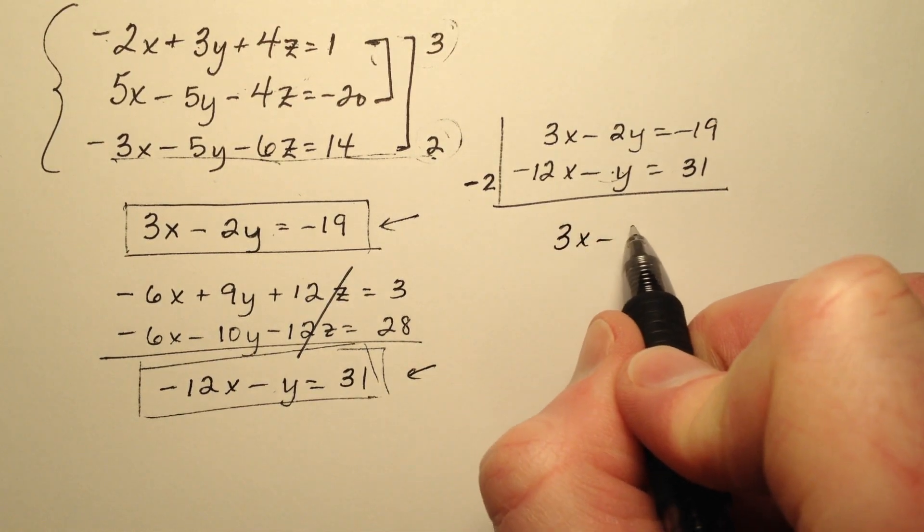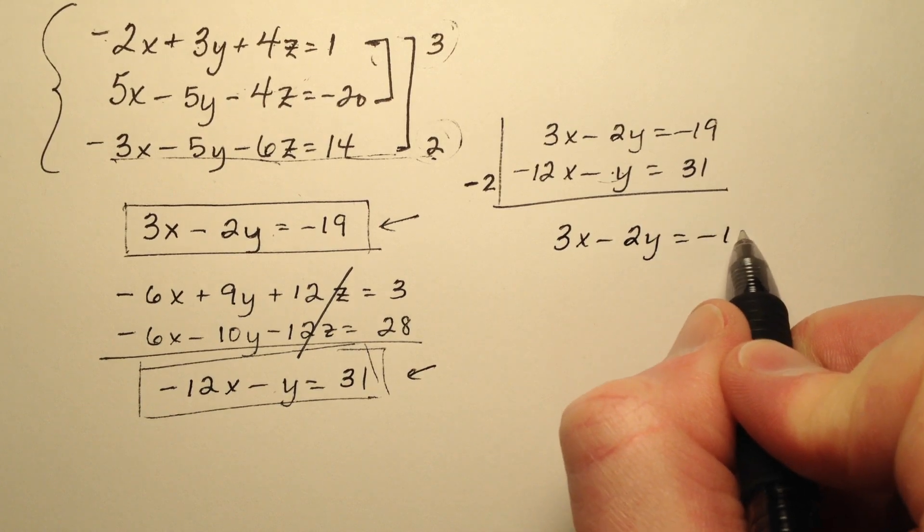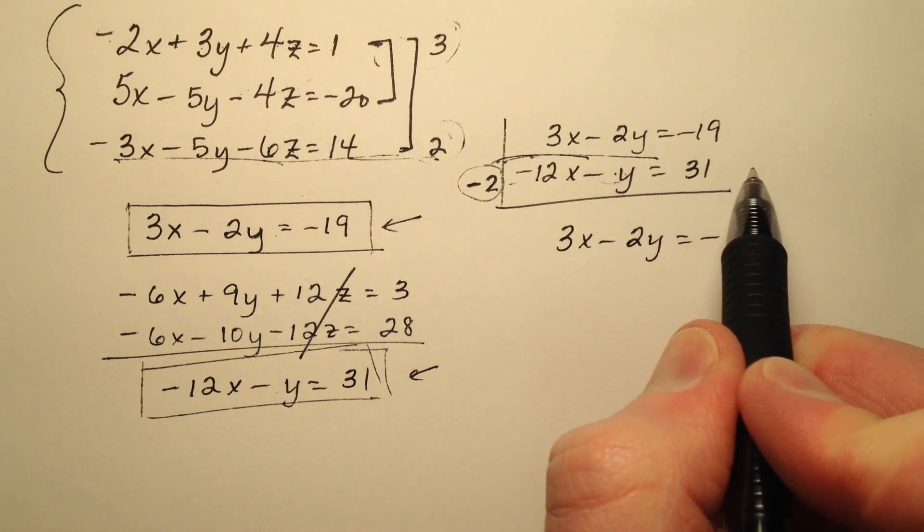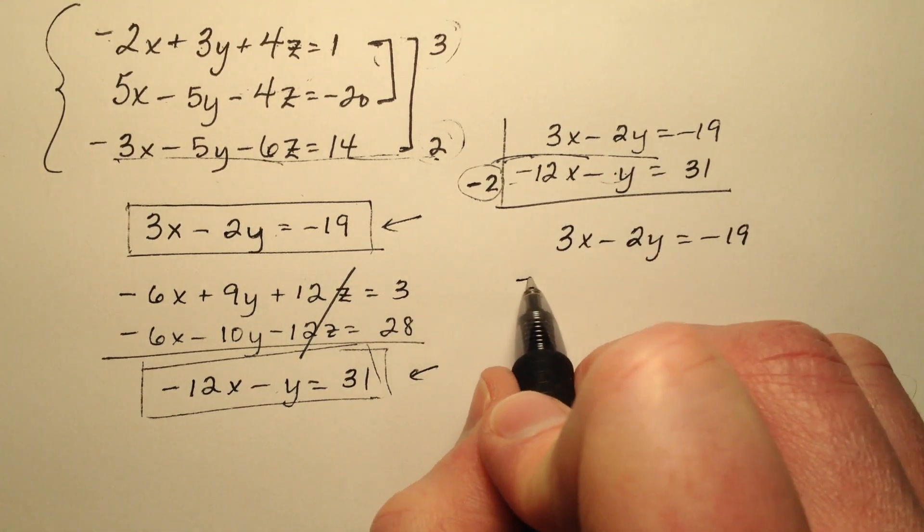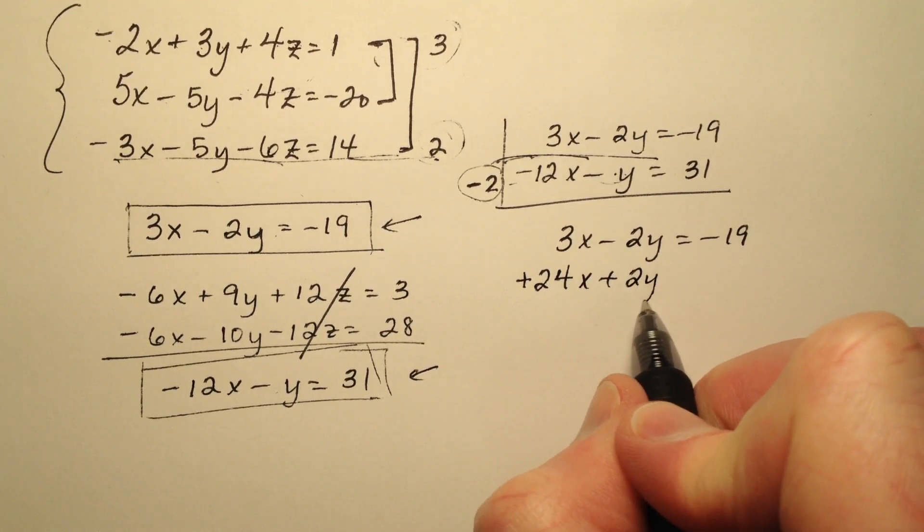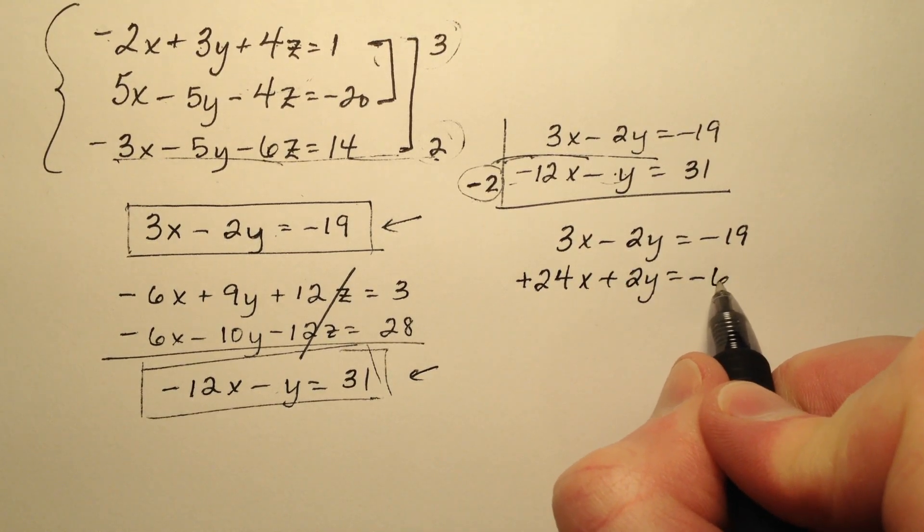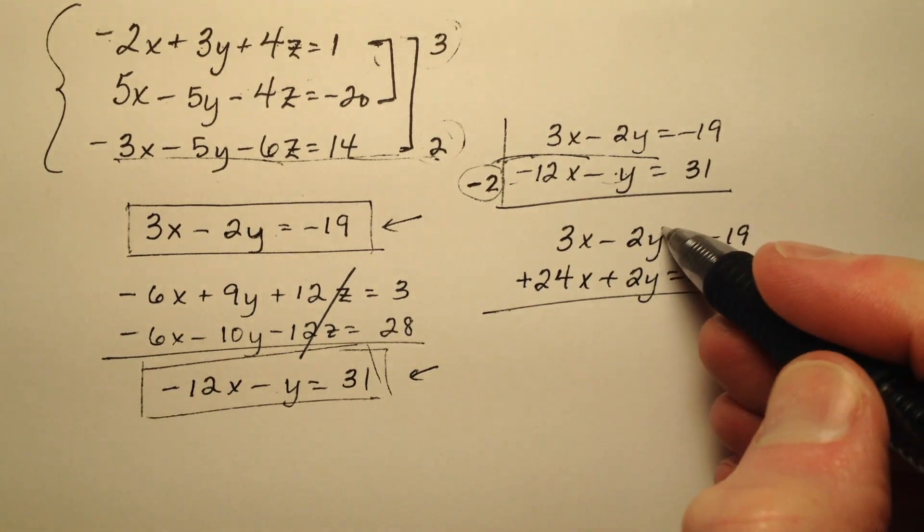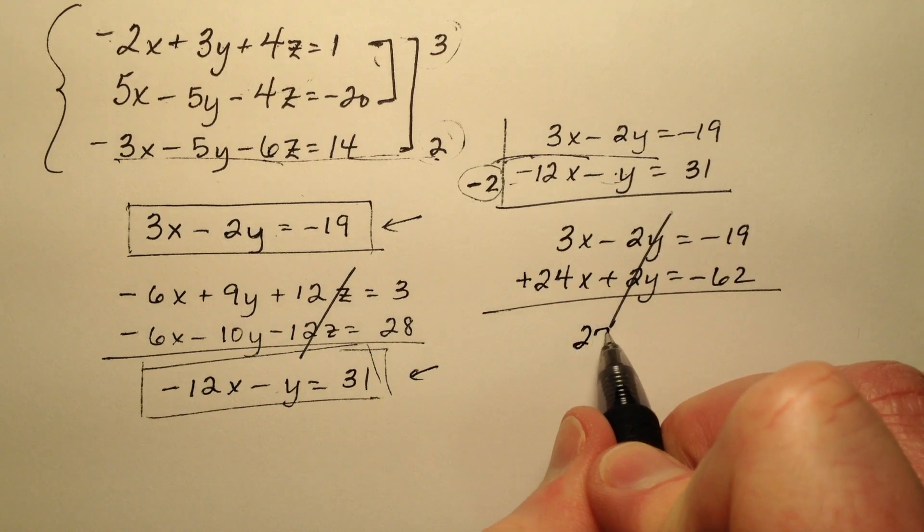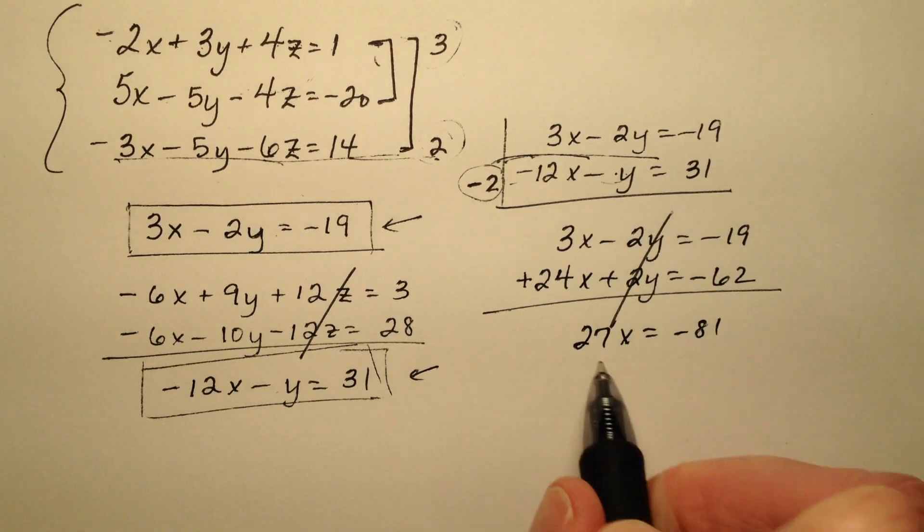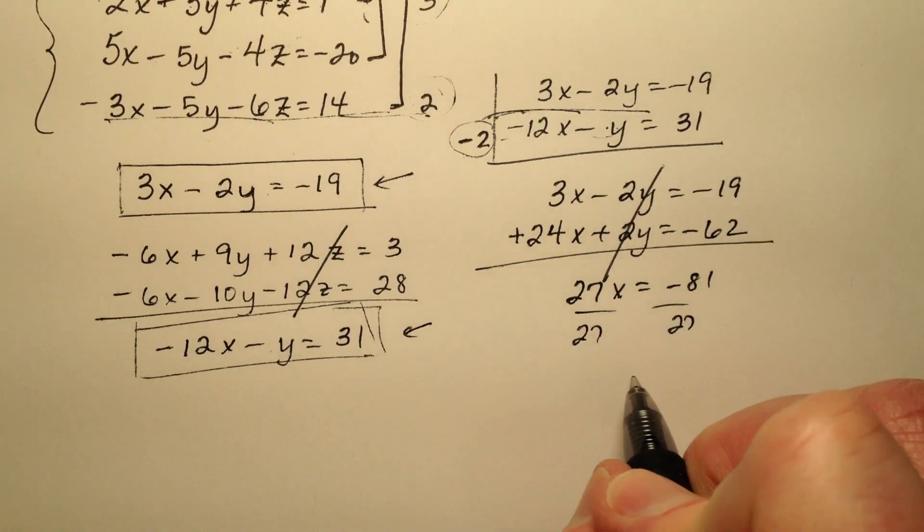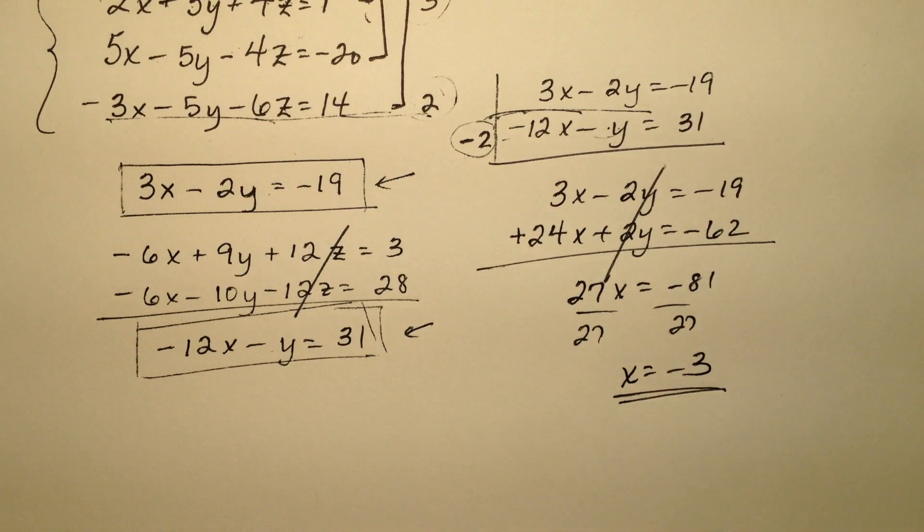So let's go ahead and rewrite the first equation. It is unchanged. And then let's go ahead and distribute this negative 2 through these three terms. So it will be a positive 24x, positive 2y, and a negative 62. So I see that these y's eliminate. And so I have a 27x equals negative 81. That will actually work out pretty nicely. So it looks like x then will be negative 3.